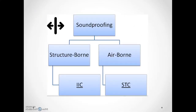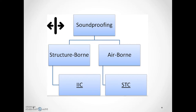Soundproofing can be broken down into structure-borne and airborne noise. To solve structure-borne issues, the best approach is to decouple the structure, because structure-to-structure contact induces vibration and allows sound energy to pass through. For airborne noise — which is what we address with walls — the best solution is to add mass. IIC, or Impact Insulation Class, is mostly relevant for floor assemblies, whereas a wall really only needs to block airborne noise.